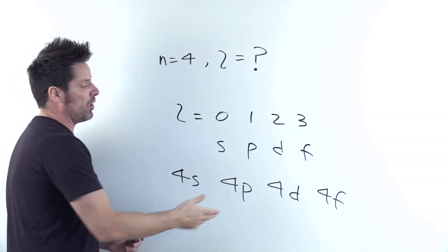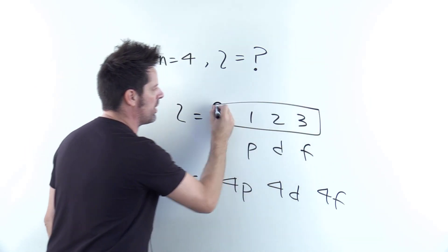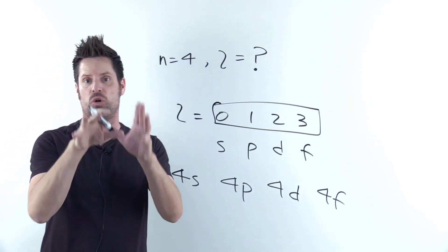So it turns out for n equals 4, you could possibly have any of the four types of orbitals, which means the correct answer for this question is all four of those, potentially 0, 1, 2, and 3.